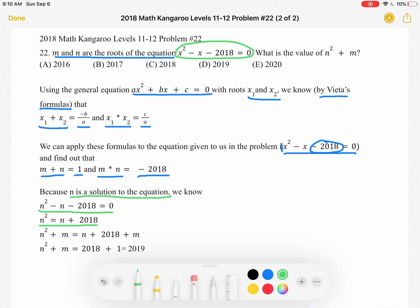So now we can see that we can add m to both sides, and now we've got, we've isolated what it is we're looking for, n² + m, we know is equal to n + 2018 + m. All we did in that step was add m to both sides.